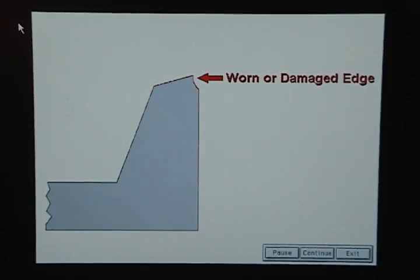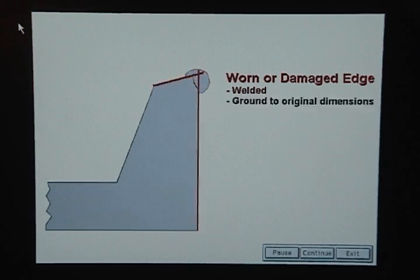If a trim edge becomes worn or damaged, it must be welded and then ground back to its original dimensions using a combination of rough grinding and finish grinding.